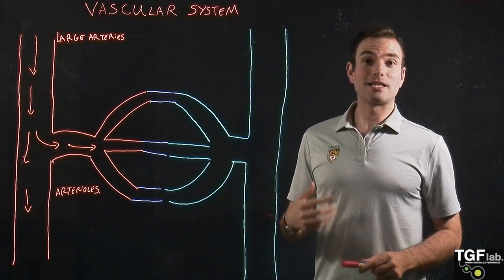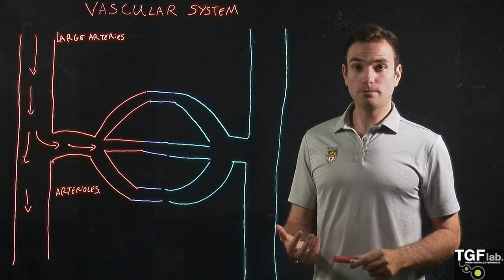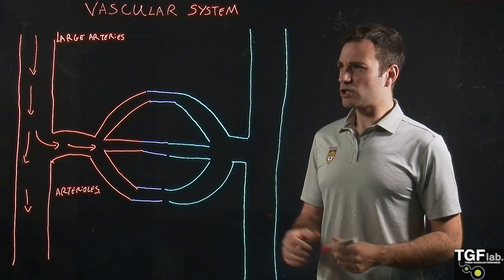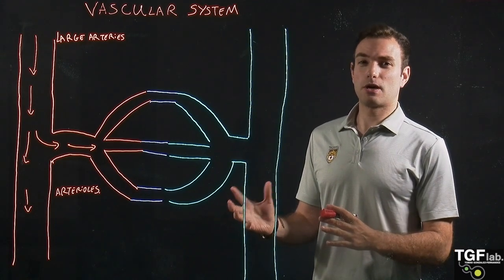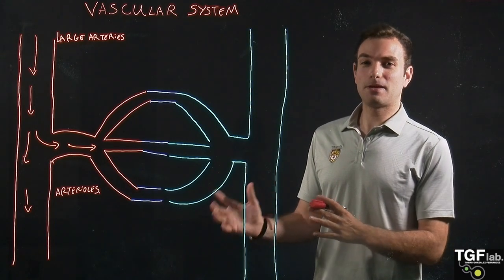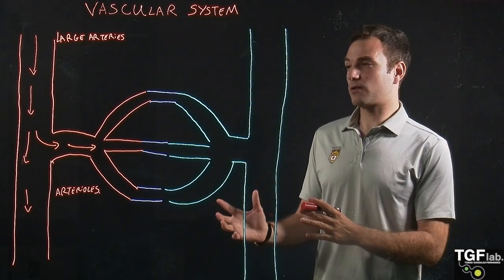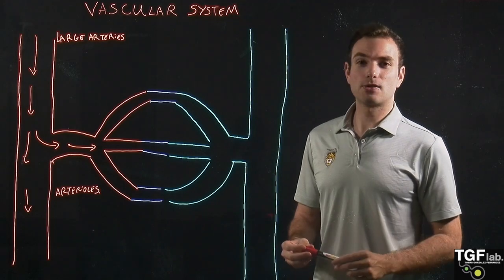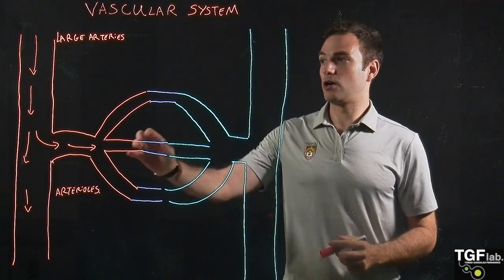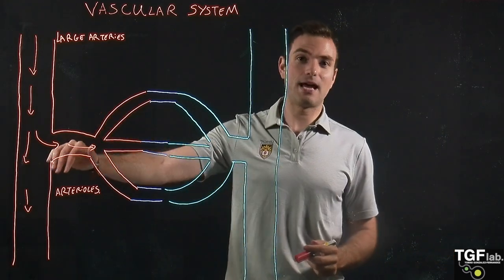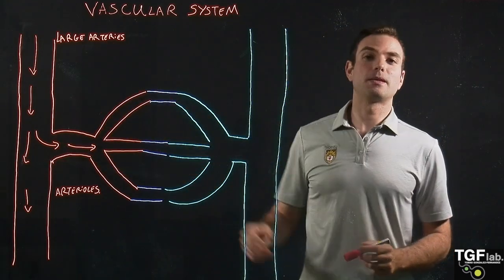Also, the pressure in the arteries is much higher, around 100 over 80 millimeters of mercury. Finally, there are no valves that regulate the movement of blood in the arteries.